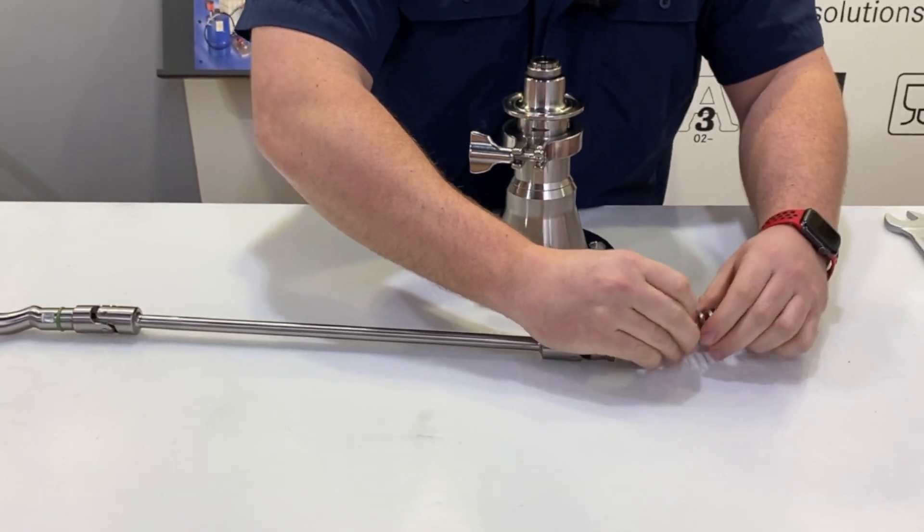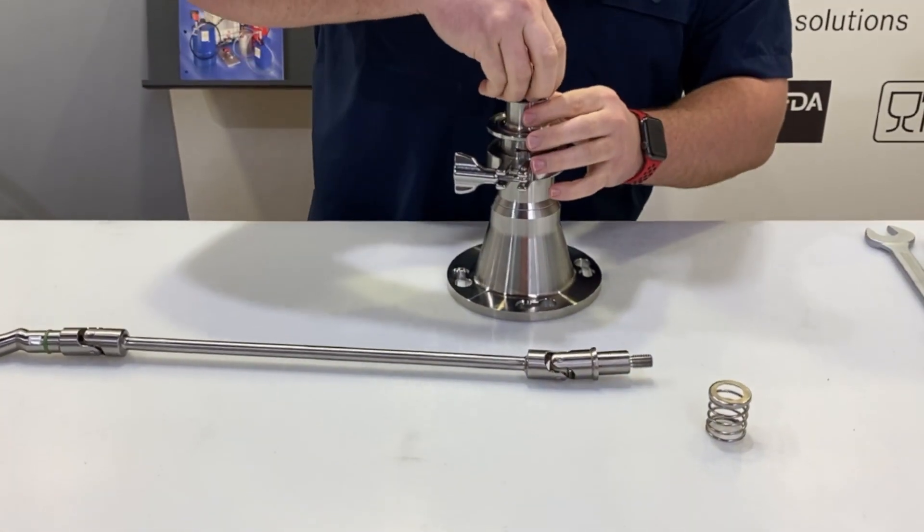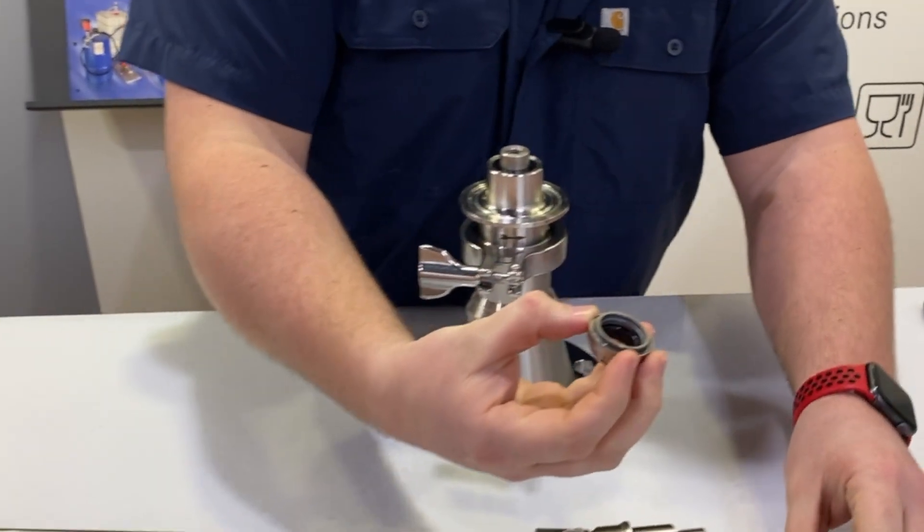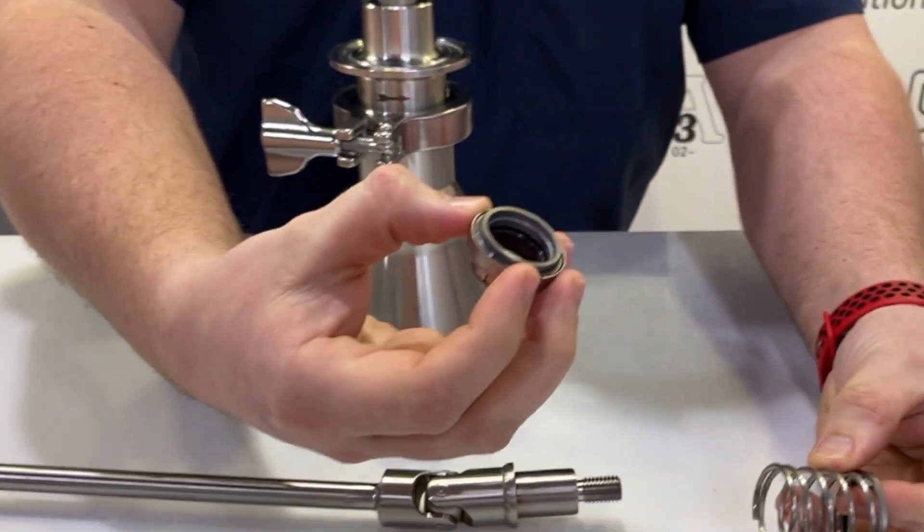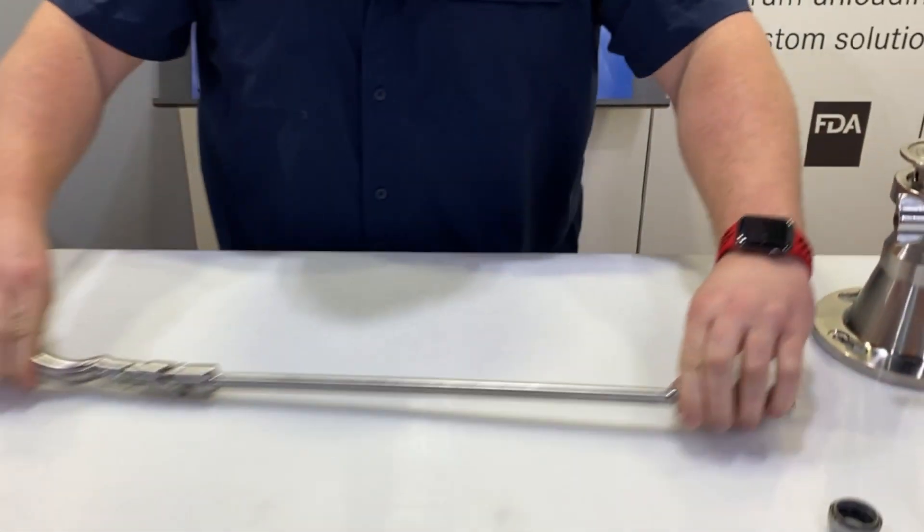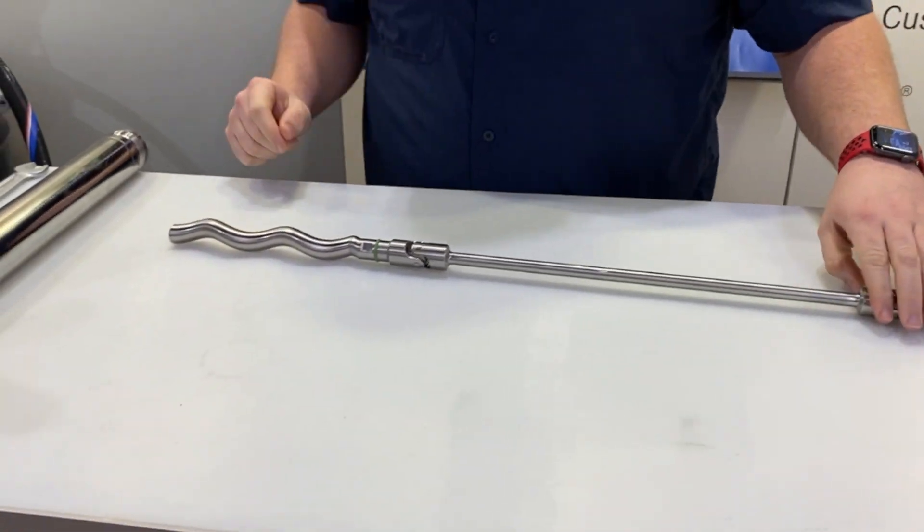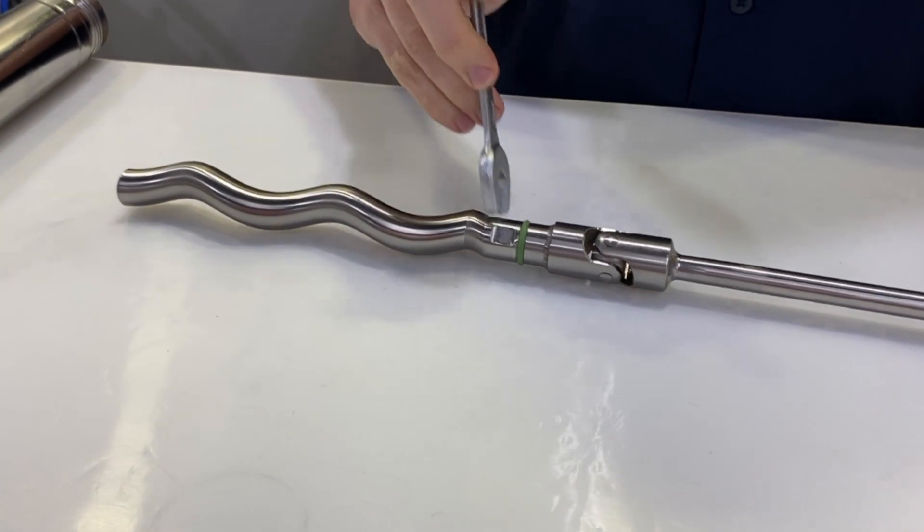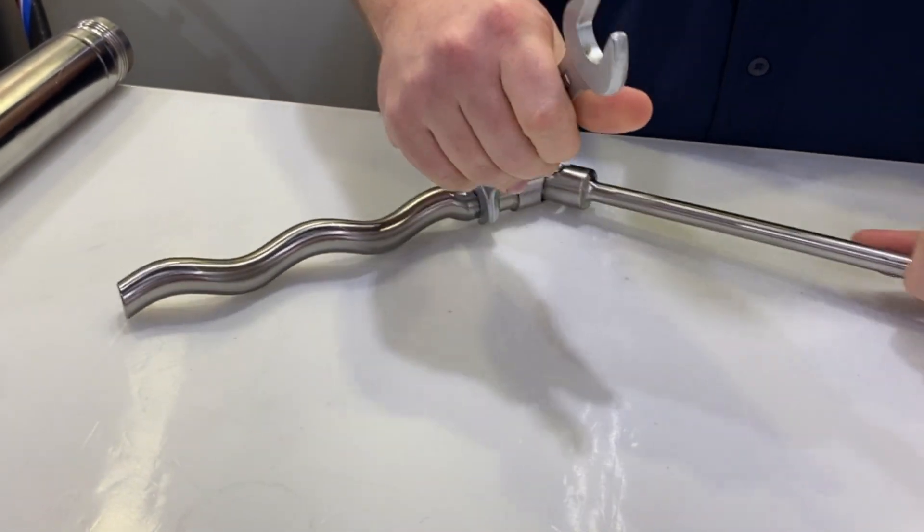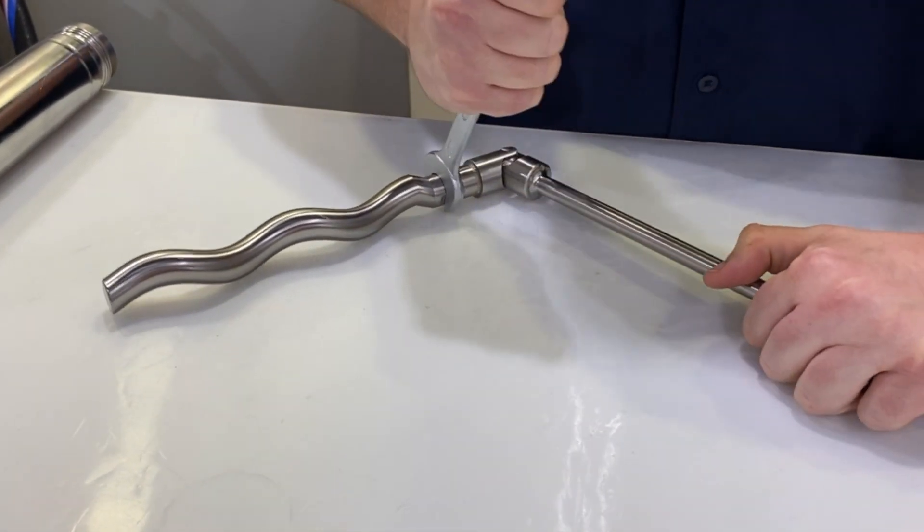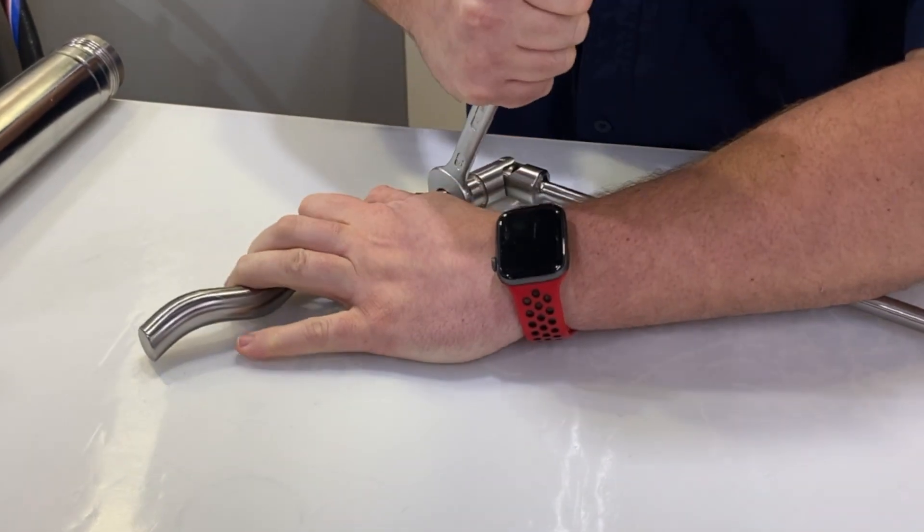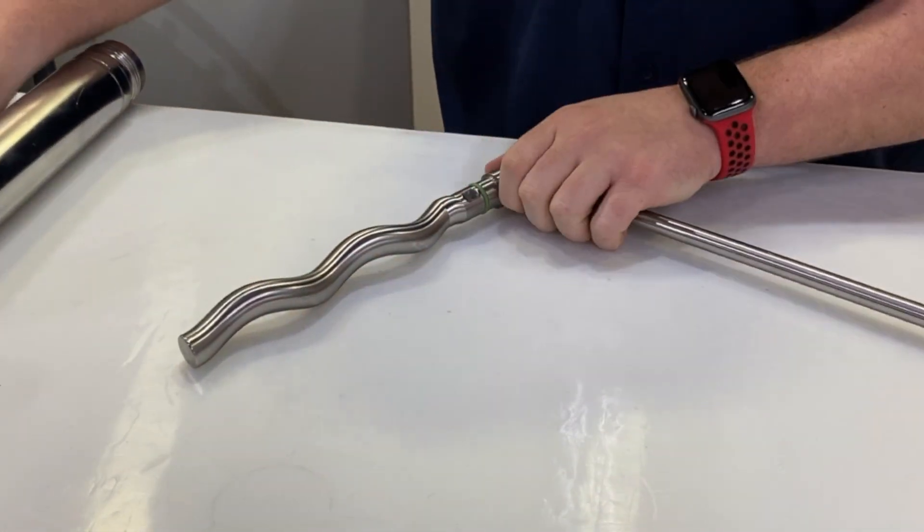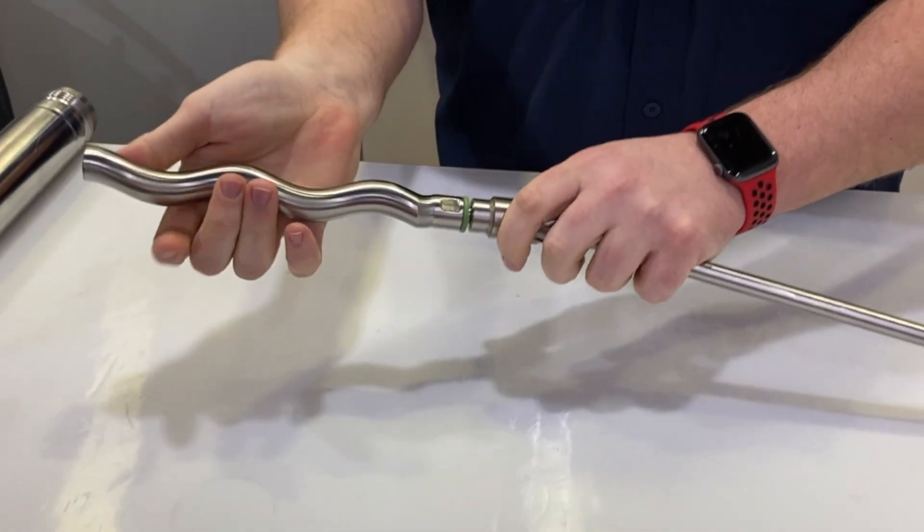Along with the shaft, you will get the mechanical seal spring and the rotating face of the mechanical seal. We will remove the rotor from the bottom of the shaft. This is done using an 18 millimeter wrench. Break that loose and then thread the rotor off.